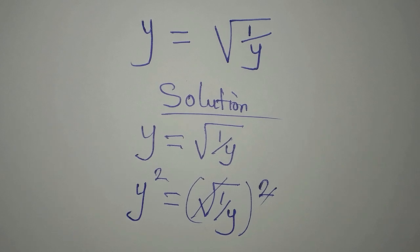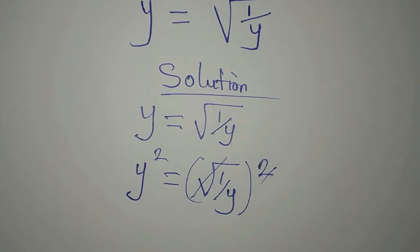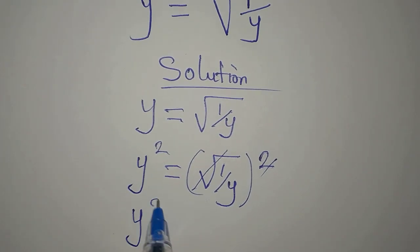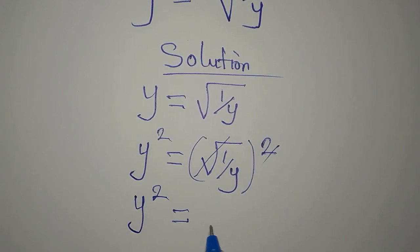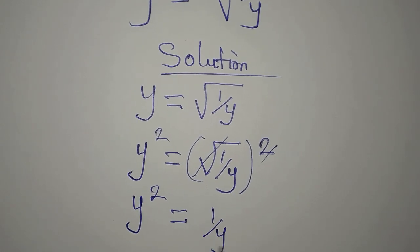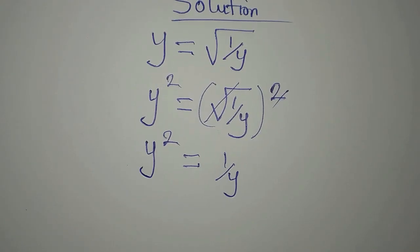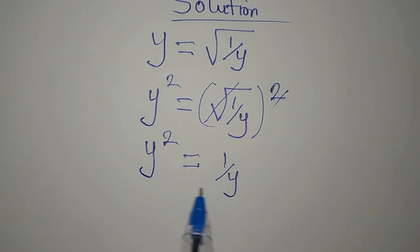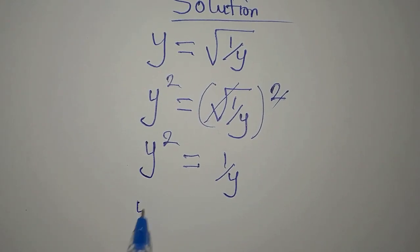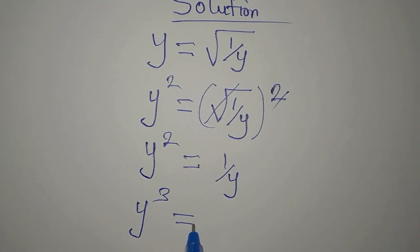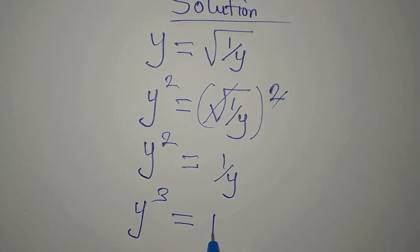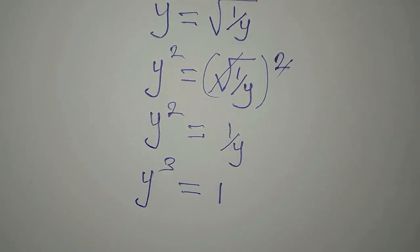Squaring both sides removes the square root, so we have y squared which is now equal to 1 over y. From here we cross multiply, so we have y times y squared, which gives y to the power of 3, and it will now be equal to 1 on the other side.